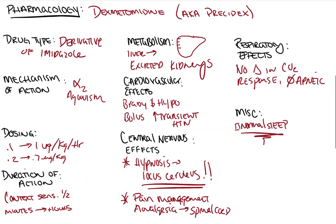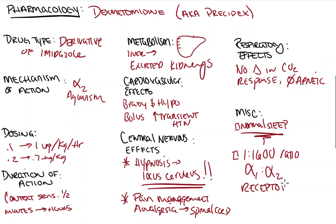The last thing that's probably going to come up for dexmedetomidine is this magic number: the 1 to 1600 ratio for alpha-1 to alpha-2 receptor agonism. This will come up — basically what this is saying is that unlike clonidine, which is also an alpha-2 agonist, dexmedetomidine binds much, much tighter to alpha-2 than it does to alpha-1, leading to very good analgesia and hypnosis because of its effect on the alpha-2 receptors in the central nervous system.